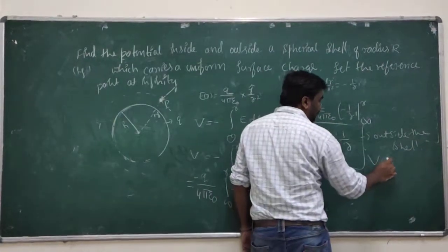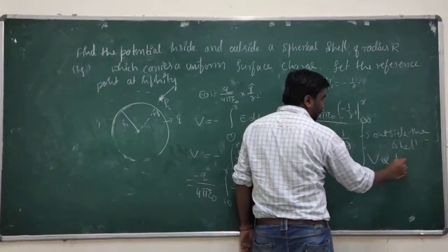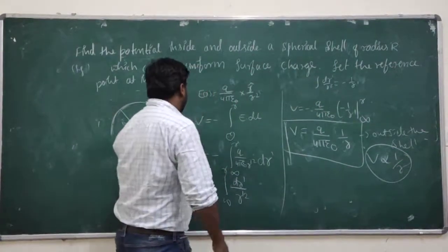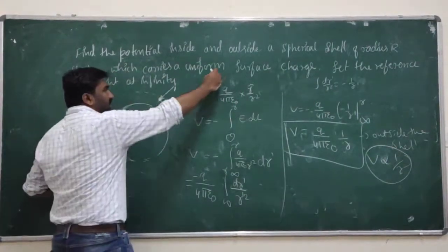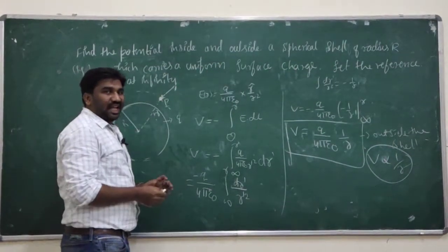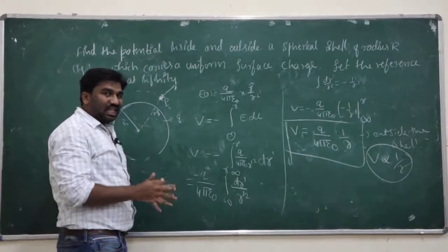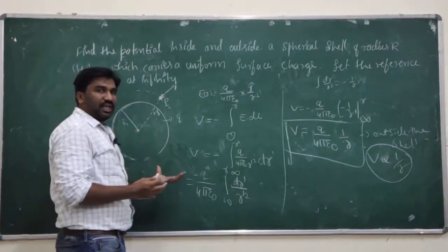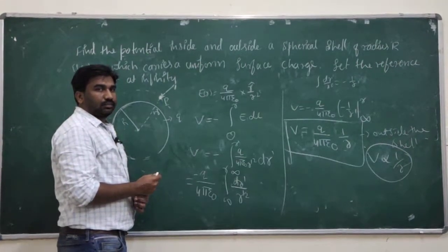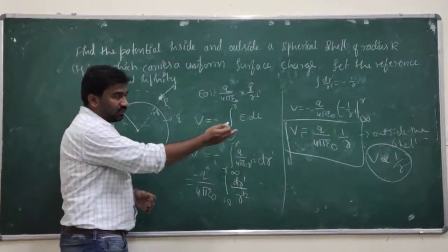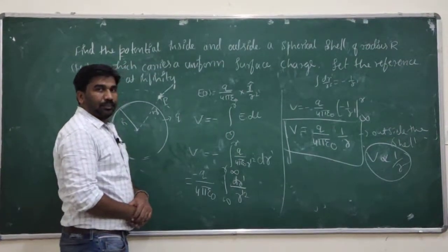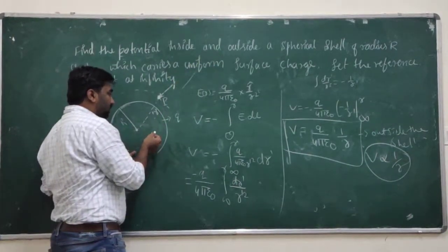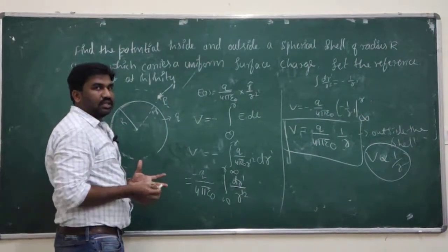The potential varies inversely with distance; V is inversely proportional to 1 over r. So with increasing distance, the electrostatic field intensity is decreasing, and the potential is also decreasing, inversely as 1 over r. With increasing distance, the potential of this spherical shell is also decreasing.